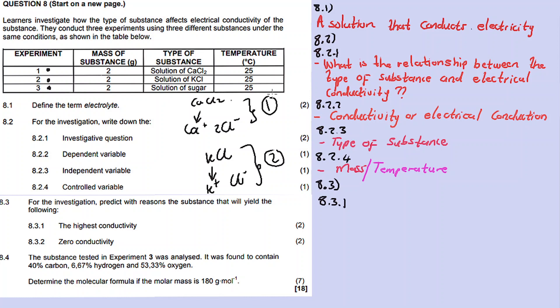Between experiment one and experiment two, both will show conduction, but one will have the highest conductivity. The higher the number of ions, the higher the conductivity. Experiment one - substance number one, calcium chloride - will give the highest conductivity.